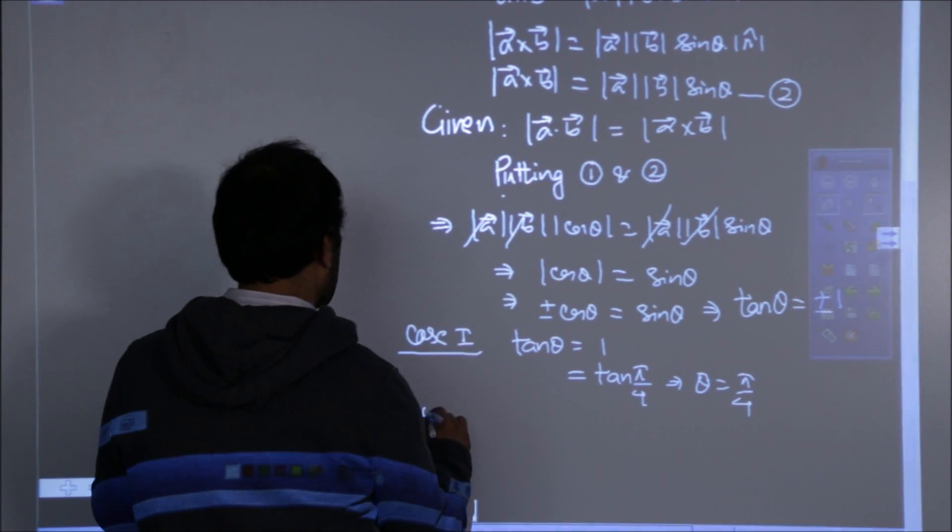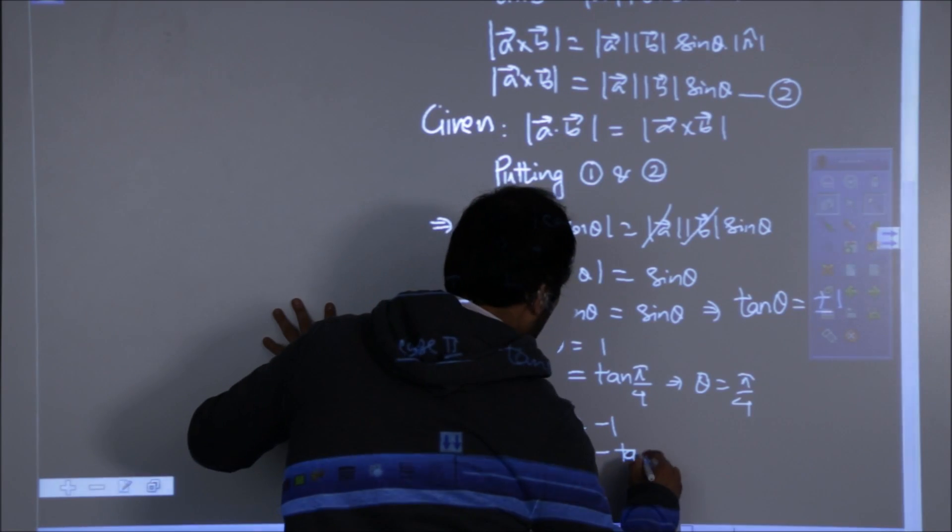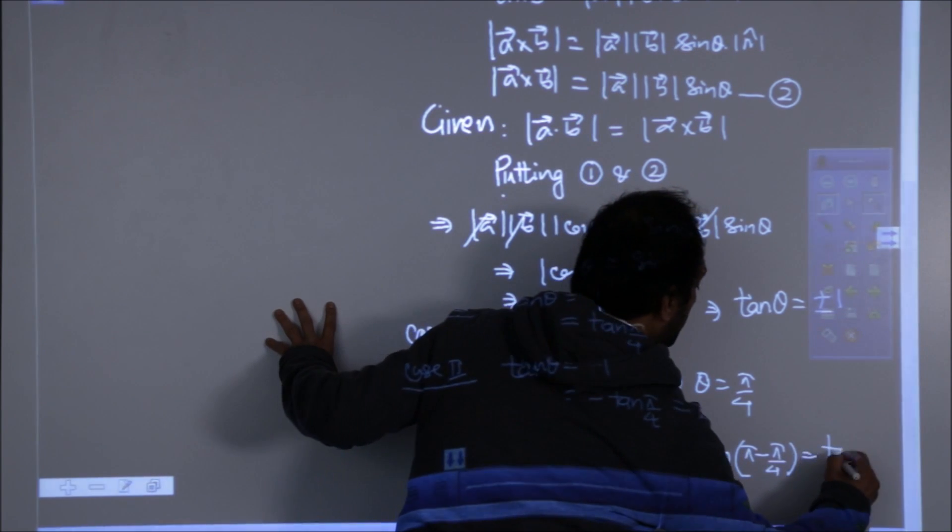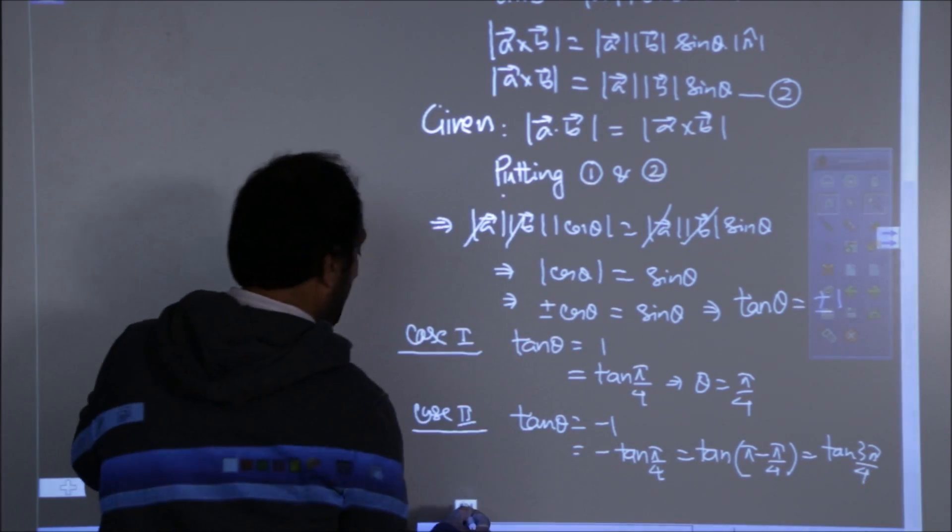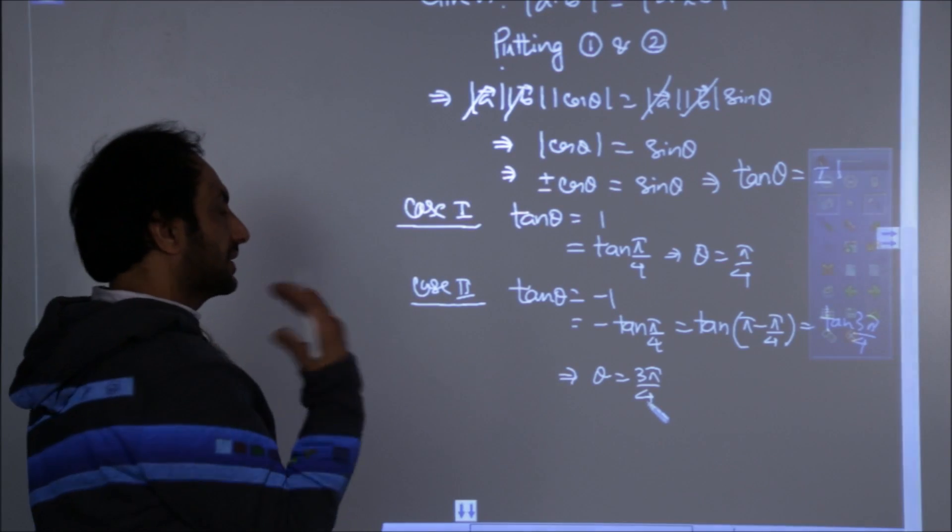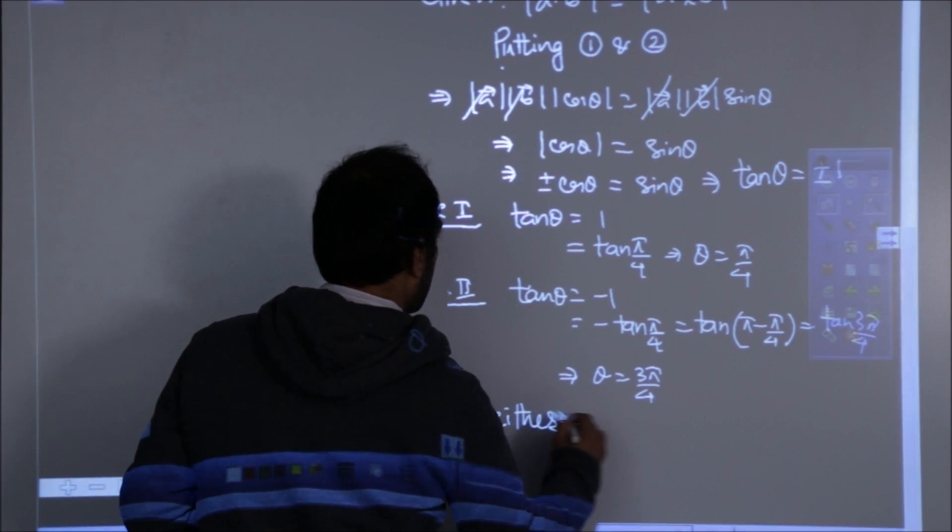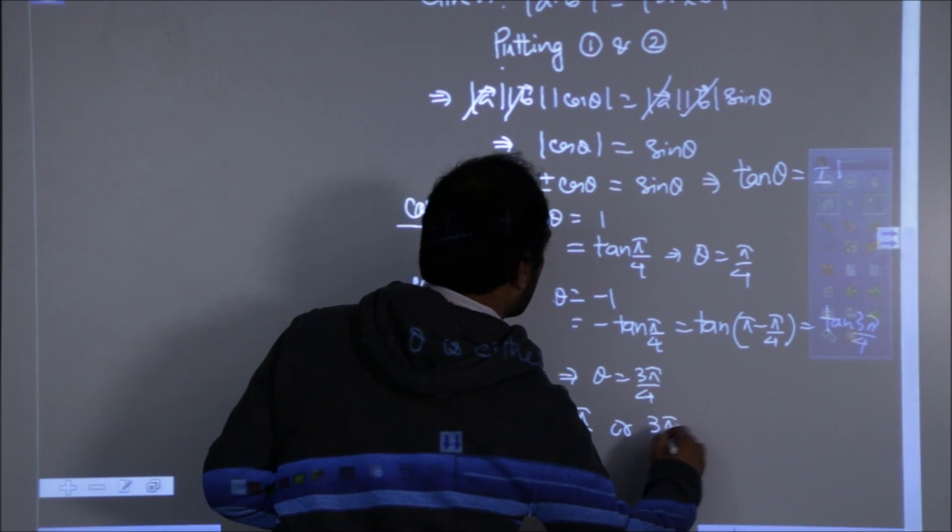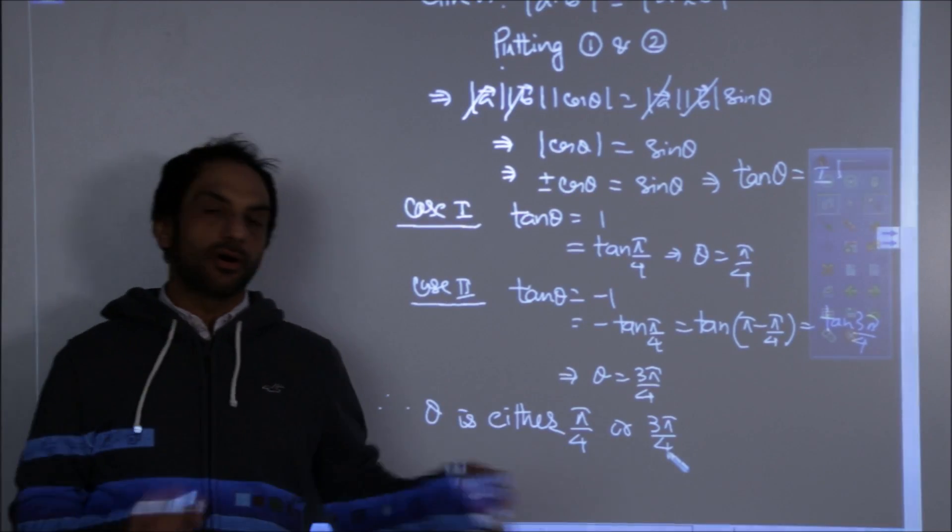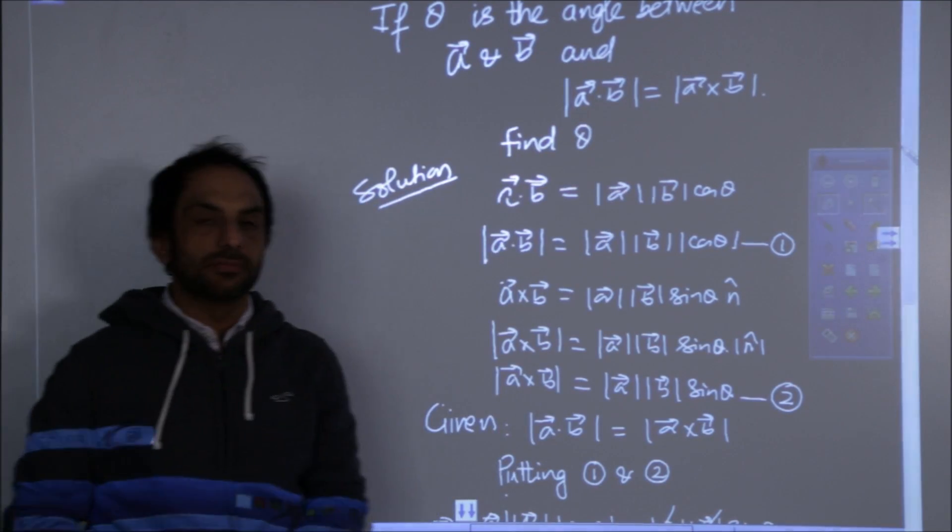But there is one more case also possible, that is when tan theta is minus one, so that becomes minus tan pi by four, which can further be taken as tan of pi minus pi by four, which is tan 3 pi by four and hence theta is 3 pi by four. So both these values fulfill the given condition, therefore theta is either pi by four or 3 pi by four. But when they say acute angle, it is only pi by four.